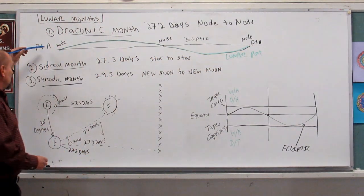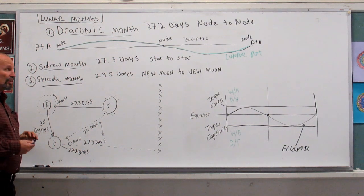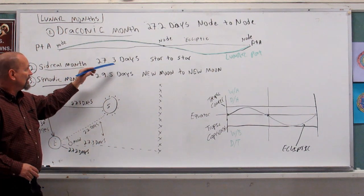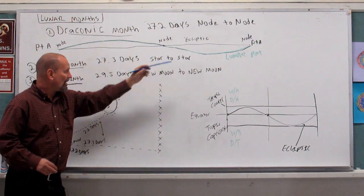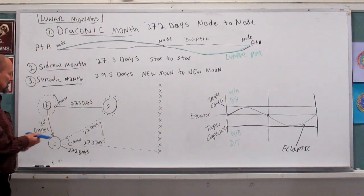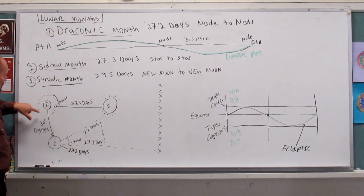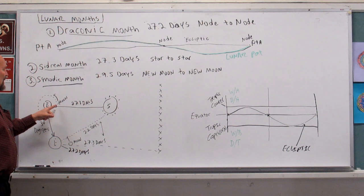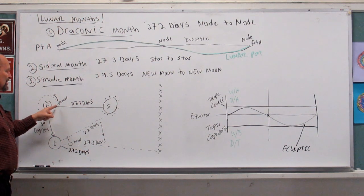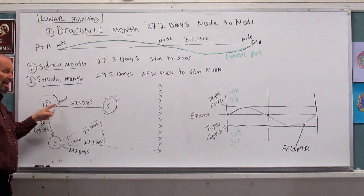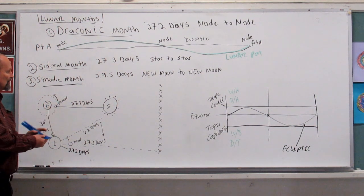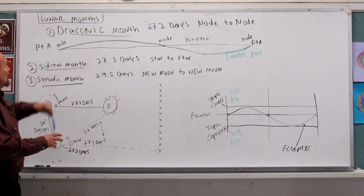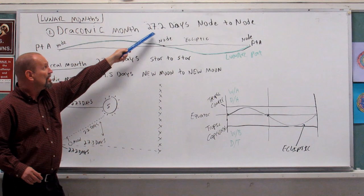The second type of lunar month is called a sidereal month. It lasts twenty-seven point three days — star to star. Here's the Earth, here's the Moon. The sidereal month is the actual amount of time it takes for the moon to go all the way around the Earth and back to the same point again, looking at the same exact star. It's one tenth of a day longer than the draconic month, which is twenty-seven point two days.